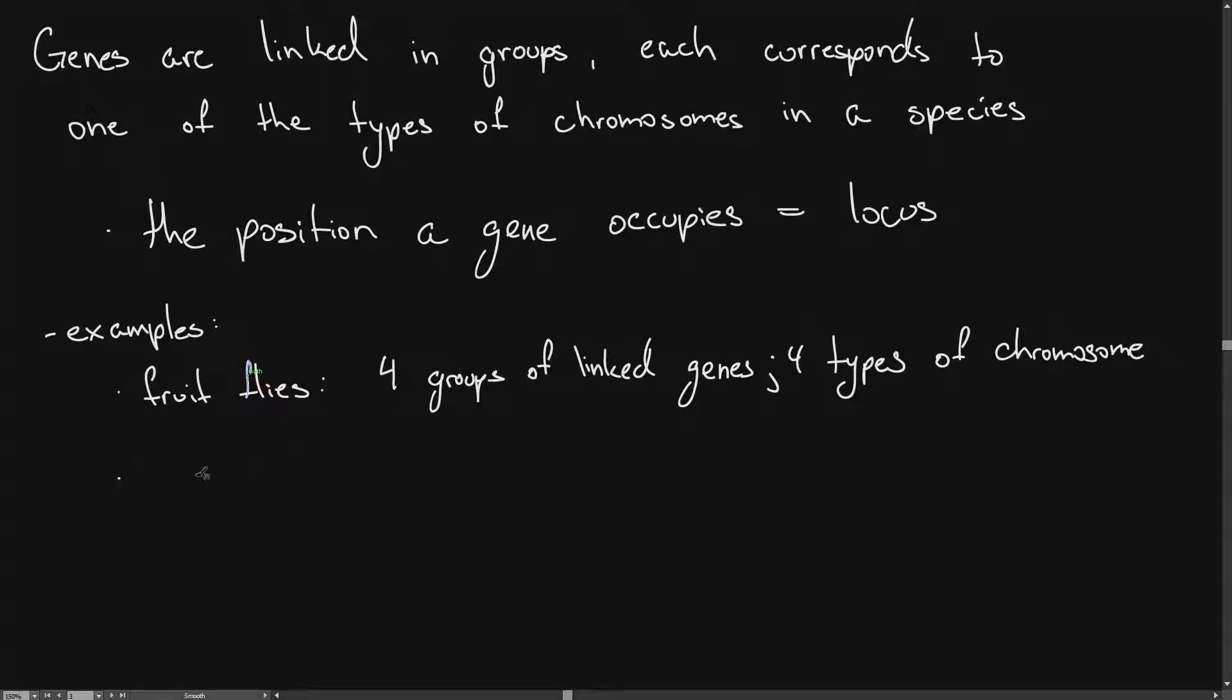Next, maize, meaning corn. And in this example there are ten groups of linked genes and ten types of chromosome.